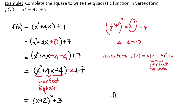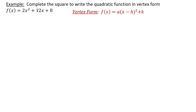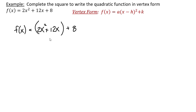So the vertex form is f of x equals x plus 2 squared plus 3. In this case, a is 1, h is negative 2, and k is 3. Now let's do another problem — completing the square to write a quadratic in vertex form. Here's a reminder of what vertex form looks like. This time we do not have a leading coefficient of 1: f of x equals 2x squared plus 12x plus 8. I'll group the x values together, then factor out the common factor of 2, giving x squared plus 6x, plus 8.